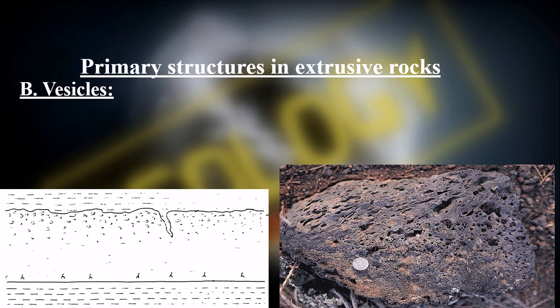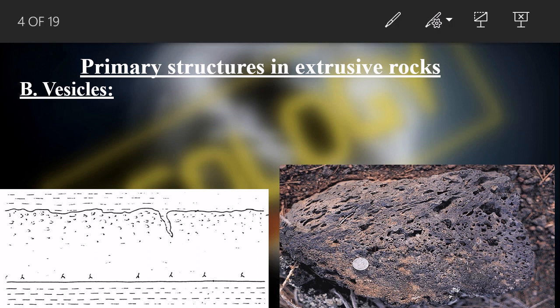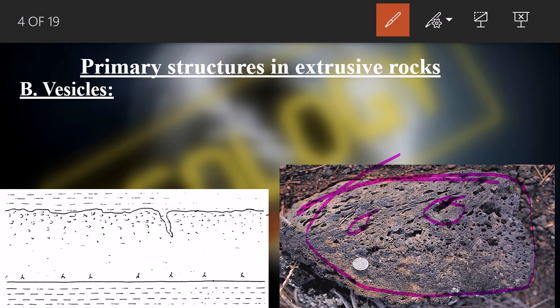Next we have vesicles. When a rock cools or is under pressure, volatile material oozes out, creating small gaps called vesicles. Sometimes these vesicles get filled with secondary or sedimentary minerals — when filled, these gaps are called amygdules or amygdaloidals. So vesicles are empty cavities, whereas if filled with secondary mineral, they are amygdaloidal.